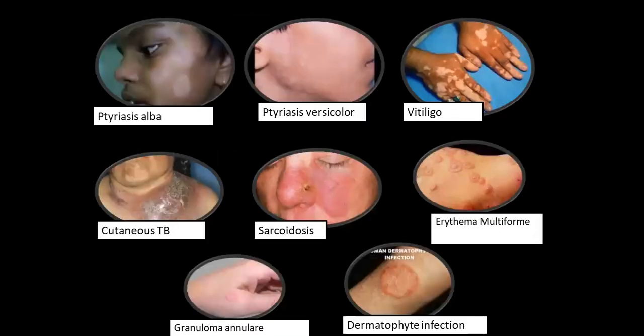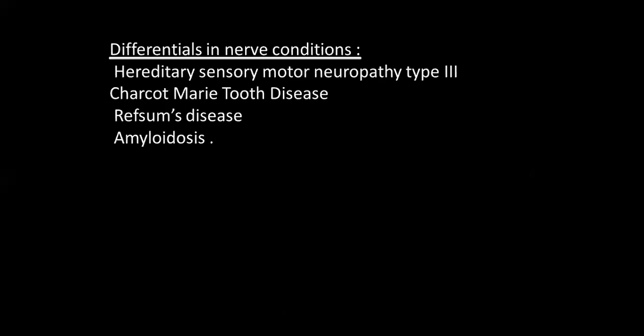Differentials: a patient may present with any of these and we may think it is pityriasis alba, pityriasis versicolor, vitiligo, cutaneous tuberculosis, sarcoidosis — when in actual it may be leprosy.